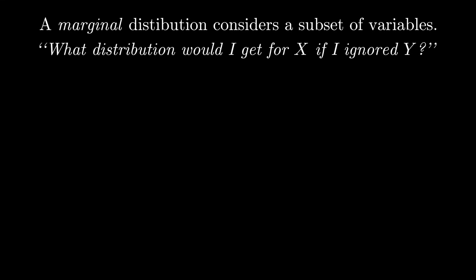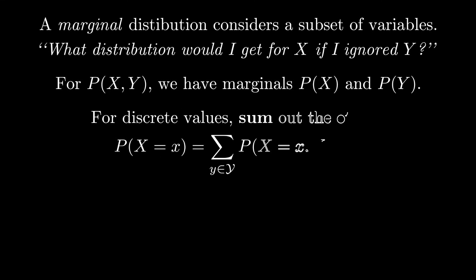As our starting point, if we had a joint distribution over just two variables, x and y, then the two marginals available to us are p of x and p of y. For discrete distributions, we compute marginals by summing over the variables that we're not interested in. This is sometimes called the sum rule of probability.